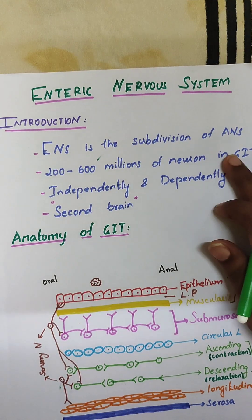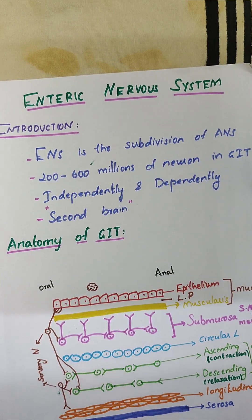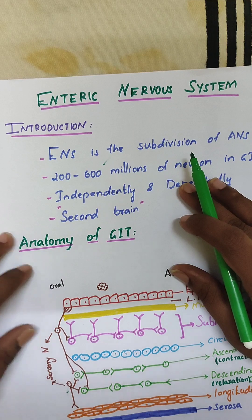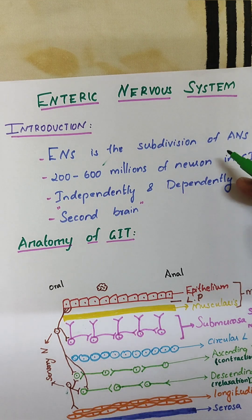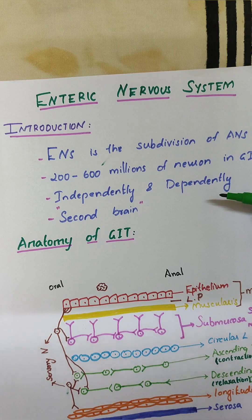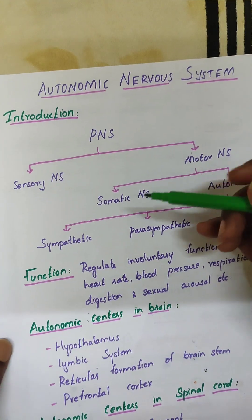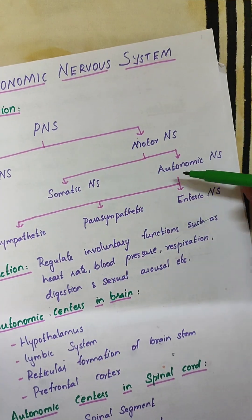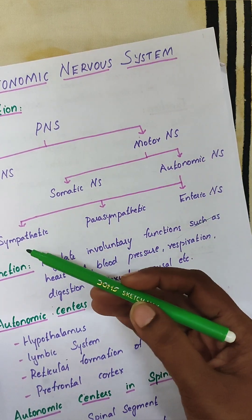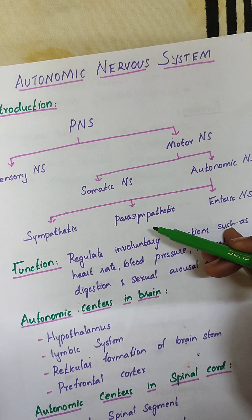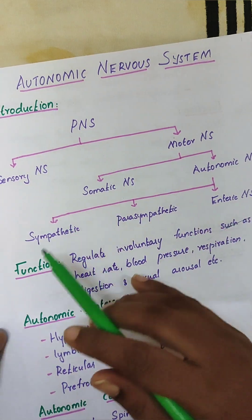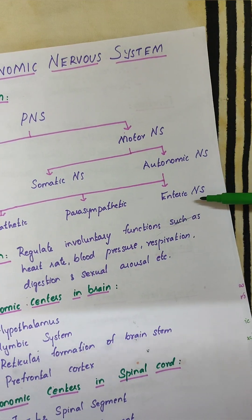Hi friends, today let's see about the enteric nervous system. The enteric nervous system is a subdivision of the autonomic nervous system. In the previous video, I have explained about the sympathetic and parasympathetic nervous system. The autonomic nervous system is divided into three parts: the sympathetic, parasympathetic, and enteric nervous system. Now comes the enteric nervous system.